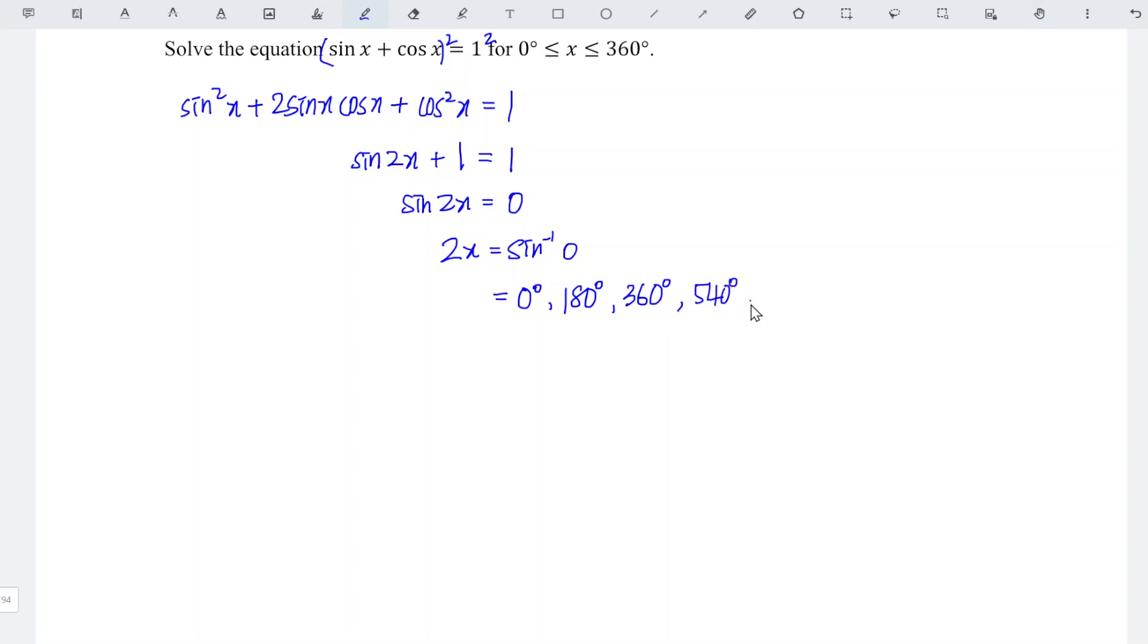360 + 360 = 720. Now we should find x by dividing all the angles by 2.